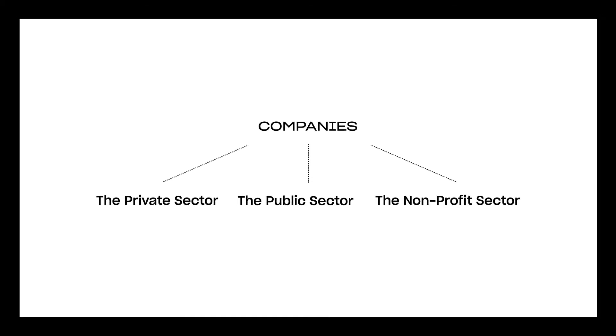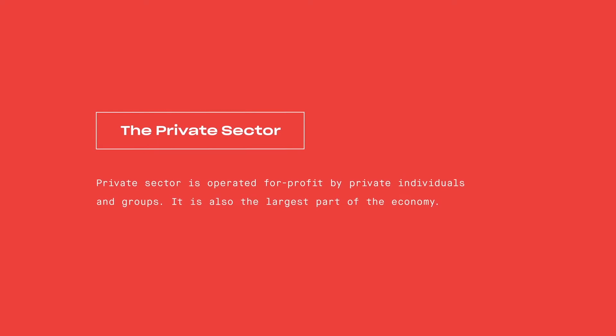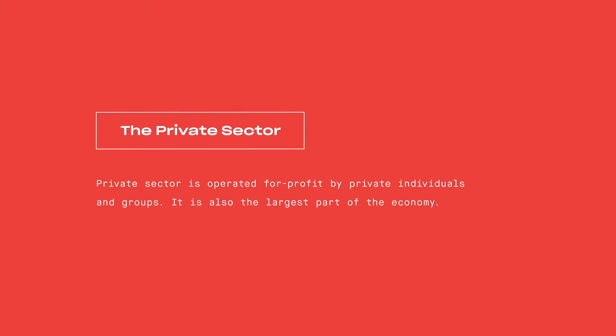At the highest level, companies are categorized by their ownership into three sectors: the private sector, the public sector, and the non-profit sector. The private sector is the part of the economy that is owned and operated for profit by private individuals and groups, rather than the government.